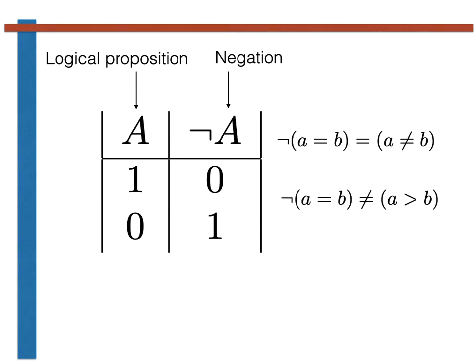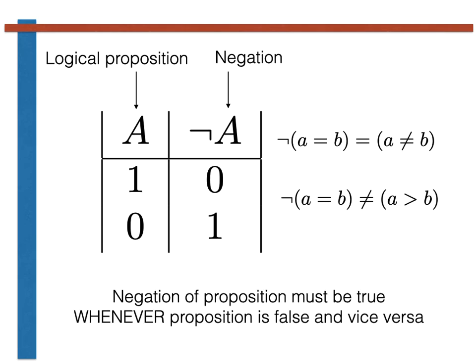Notice that A is greater than B is not equivalent to A is not equal to B. If A and B are equal, then A is not greater than B. If A is less than B, then A and B are not equal, however, and both of these propositions are simultaneously false. In other words, when you are constructing the negation of some proposition, you must take pains to ensure that the negation of the proposition is true whenever the original proposition is false and vice versa.